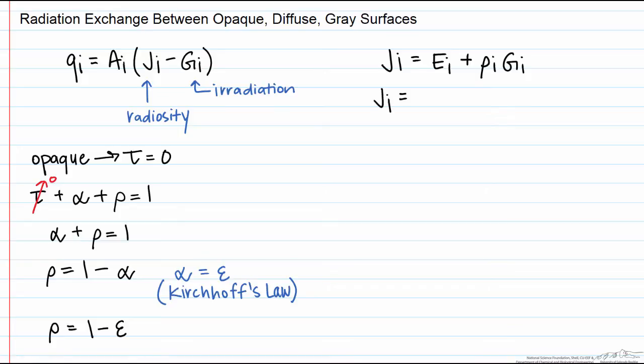We can also write the emissive power as the emissive power of a black body. So now let's rewrite our radiosity. We're going to write that irradiation in terms of the radiosity.